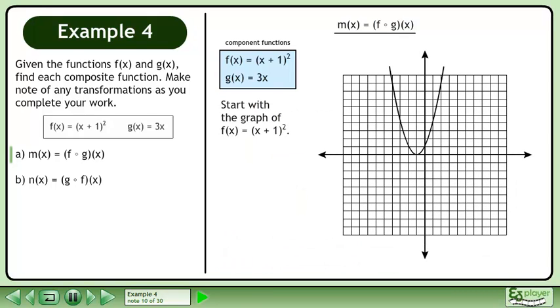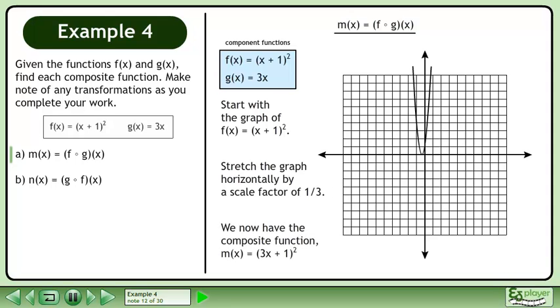Start with the graph of f(x) = (x + 1)². Stretch the graph horizontally by a scale factor of 1/3. We now have the composite function m(x) = (3x + 1)².